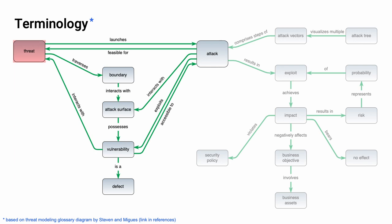An attack surface and a boundary interact with each other, and an attack interacts with the attack surface. A threat traverses a boundary. When we're talking about a threat, we're talking about some boundary traversal as presented by an attack surface. It becomes an issue when there's a vulnerability. An attack surface which possesses a vulnerability is a defect. It's key to be able to identify these attack surfaces because if there is no attack surface, there can be no attack and no threat, since there is no traversal of a boundary.